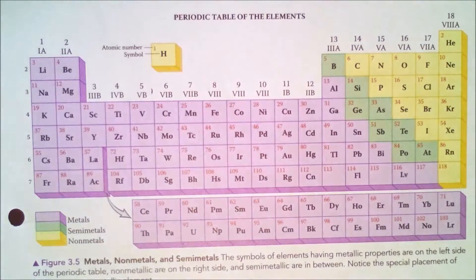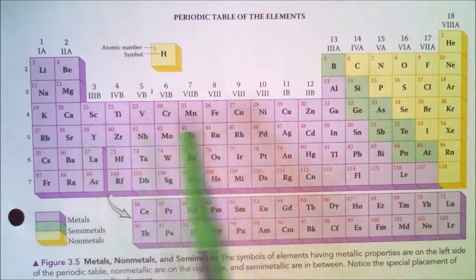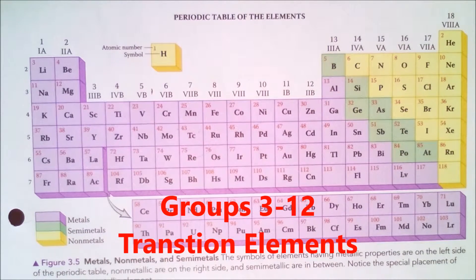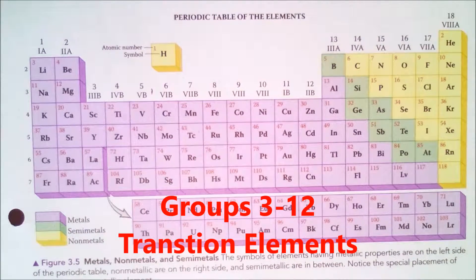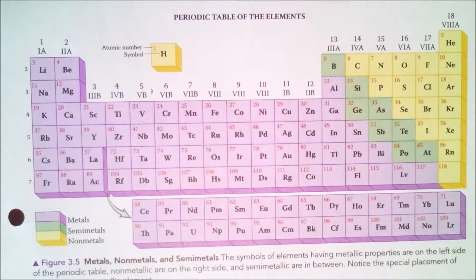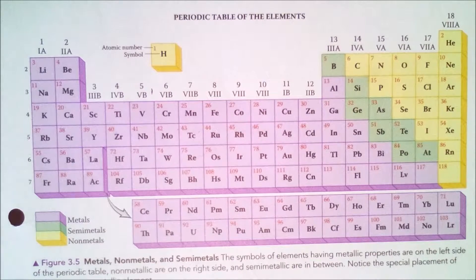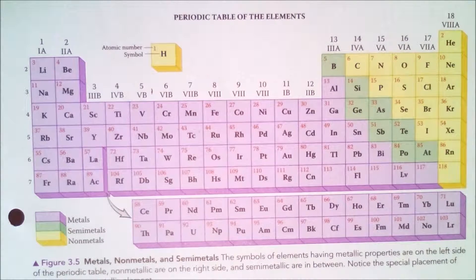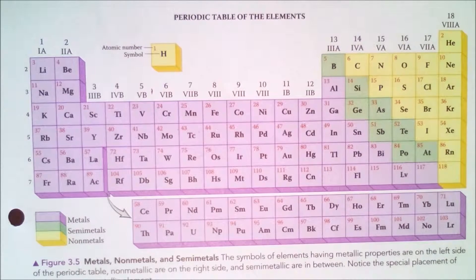Now, the group that's right here in the middle, groups 3 through 12, those are referred to as your transition metal groups. Transition metals are noted as transition because they change. They change their charges. We'll get into charges in a couple of weeks. But for right now, the transition metal groups have multiple charges. Not all the elements in that group do, just some of them.